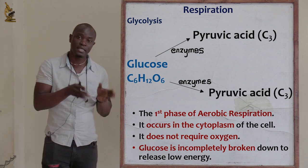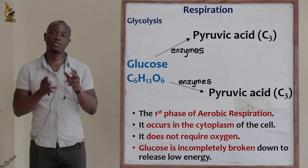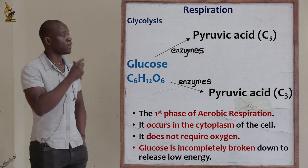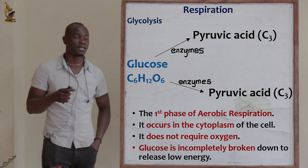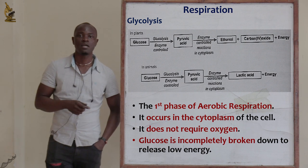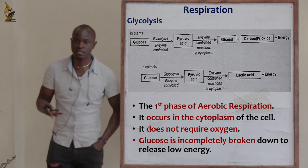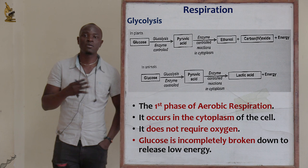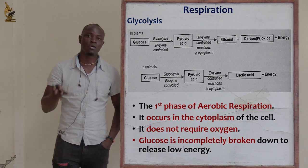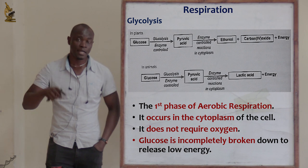Glucose is a six-carbon compound (C₆H₁₂O₆). In glycolysis, this six-carbon glucose is broken down to two three-carbon compounds — two molecules of pyruvic acid. As shown in the diagram, glucose undergoes glycolysis in the presence of enzymes to give pyruvic acid. This pyruvic acid can then be broken down under different enzymatic conditions to form ethanol plus carbon dioxide plus energy in plants.